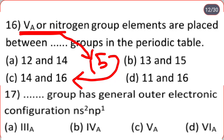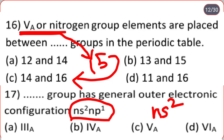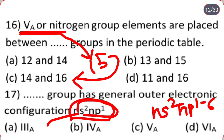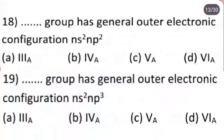Which group has the general outer electronic configuration ns²np¹? That is 3A — option A. Which group has general electronic configuration ns²np²? That is 4A. And ns²np³ is for 5A — option C.